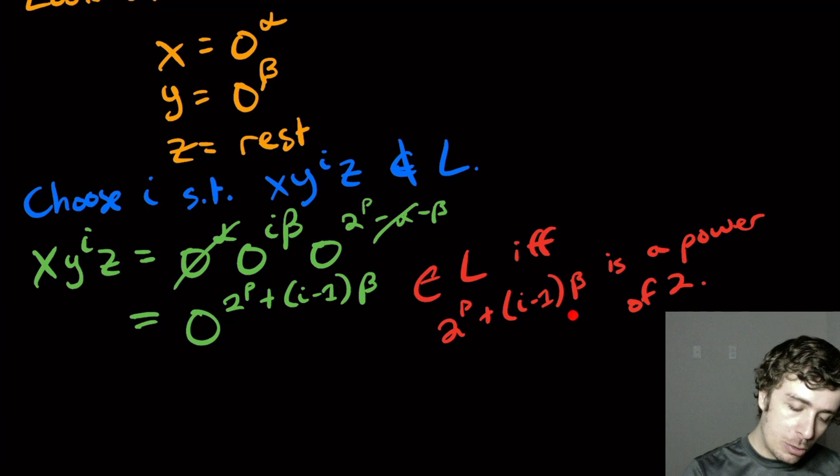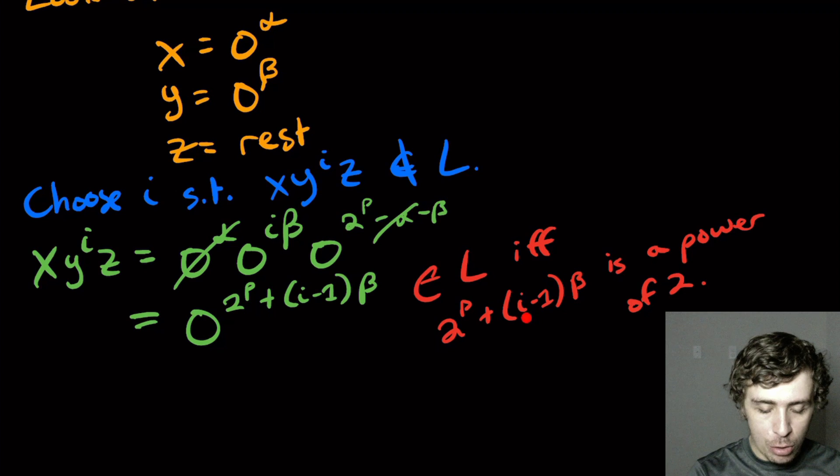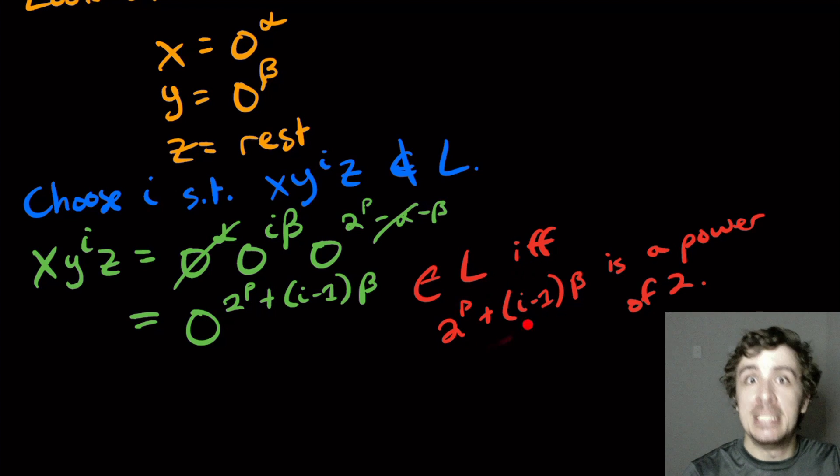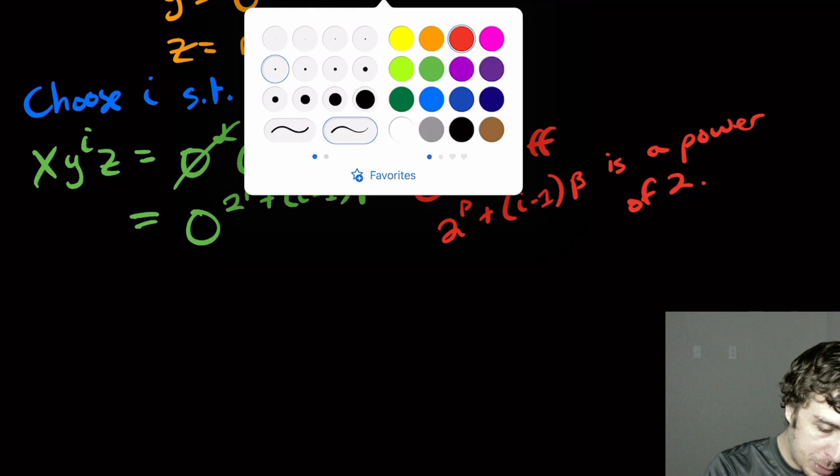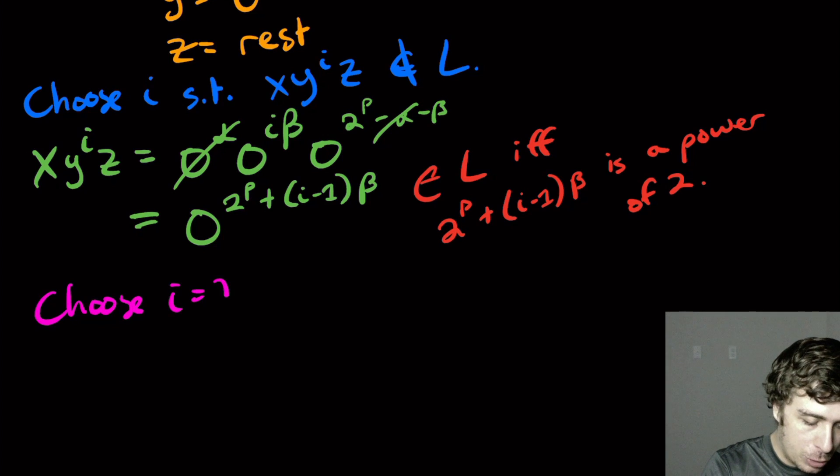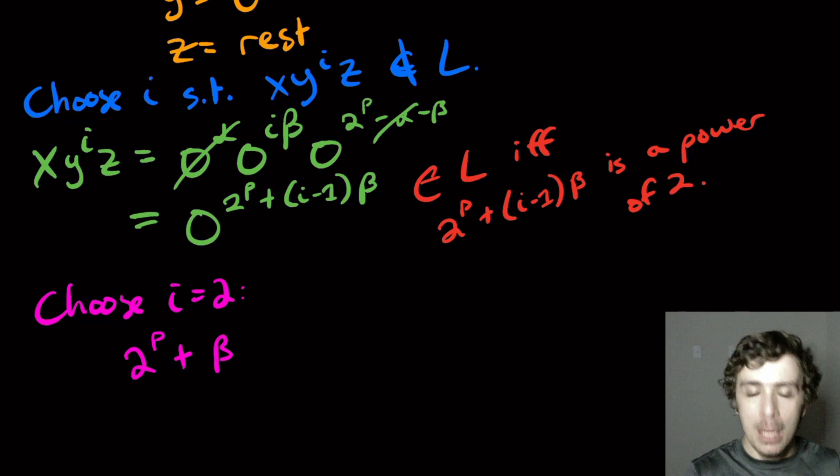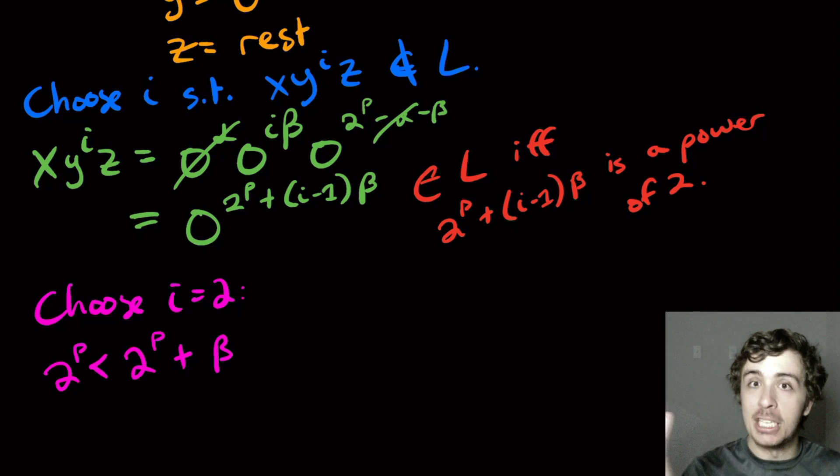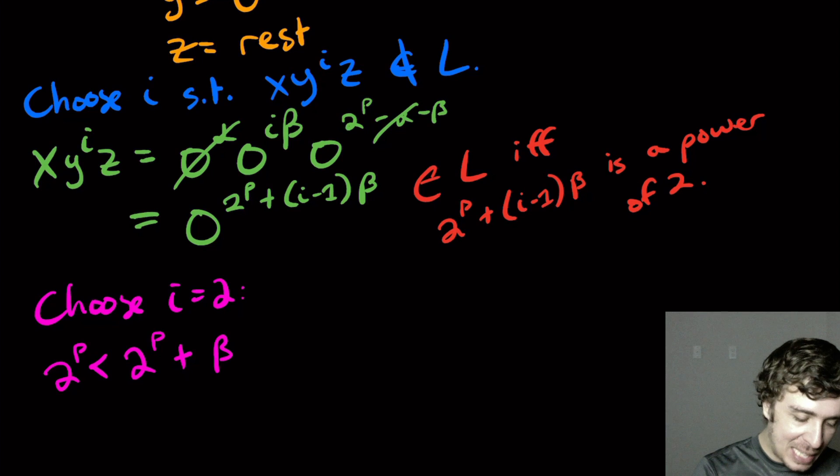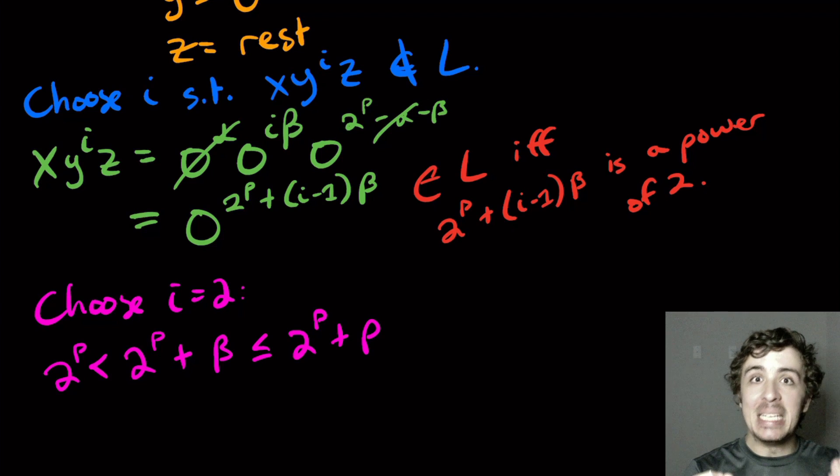So what we can do is to think, if we set I equal to one, then this thing would be zero, and so two to the P plus zero is two to the P, which is a power of two. So what if we set I equal to two as an example? So let's choose I equal to two. That is two to the P plus a single beta. We know that beta is at least one, so this is strictly larger than two to the P, because beta is at least one, and it's at most two to the power of P plus a single P because the beta is at most P.